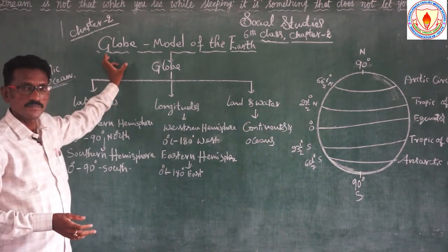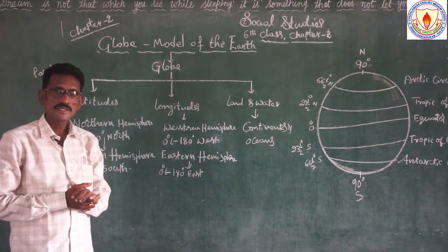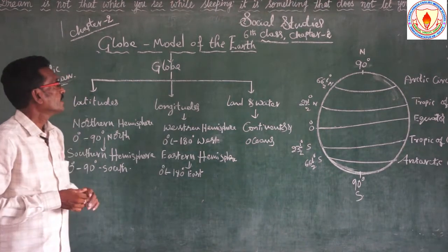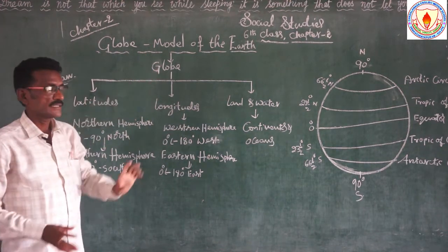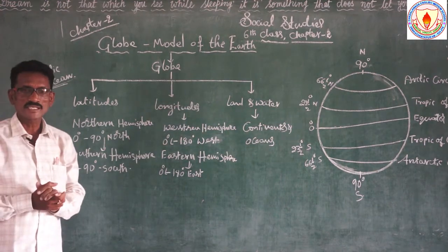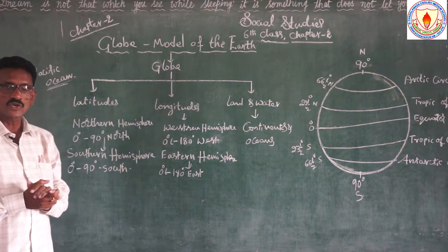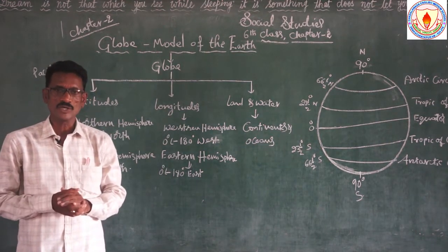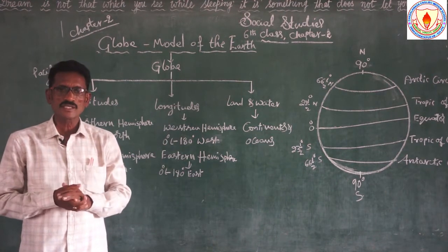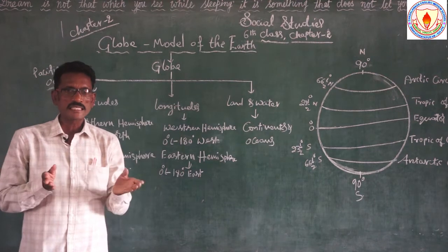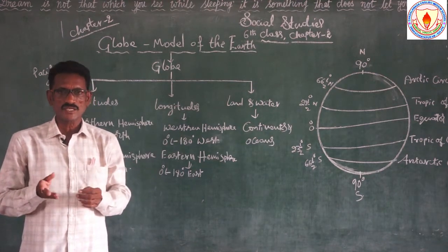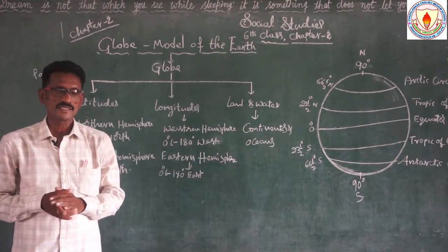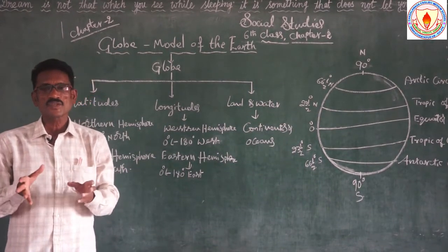So globe — we know very well about the globe. It is a model of the earth, the true model of the earth. When we observe the world map and the Pacific Ocean — the biggest ocean in the world — when we see it on the old map, it is located on the east side also and on the west side also. But actually there are not two Pacific Oceans.